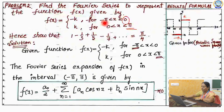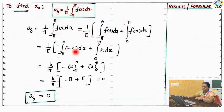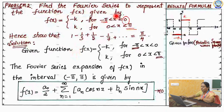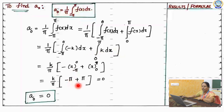What is the value of f of x in the interval minus pi to 0? From minus pi to 0, your function f of x is minus k. And from 0 to pi, your function is k. Substituting these values and integrating and evaluating, finally you got a0 value is 0.